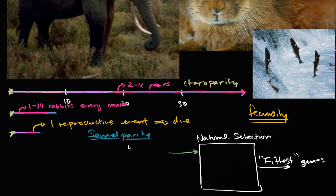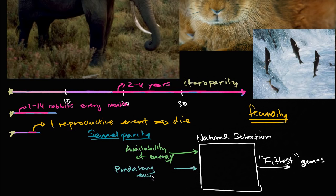And then the inputs that are going into this natural selection box are things like availability of energy, of food. I'll call it free energy. Obviously plants can get that free energy from the sun. Availability of energy. We could talk about the predatory environment and disease.